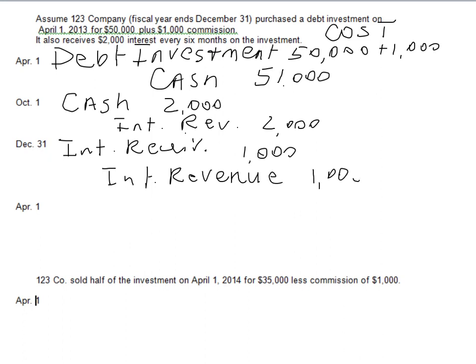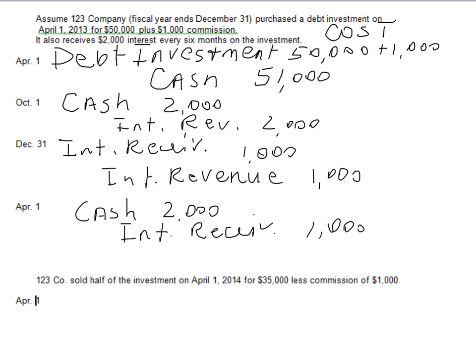On April 1st, we receive cash of $2,000 — the same check as before — however the sources are different. First, we collect the Interest Receivable of $1,000, so we credit Interest Receivable for $1,000. The second portion of $1,000 came from Interest Revenue in 2014. The revenue recorded at year-end was for 2013, and this portion is recorded in 2014 — that's why we had to split it.